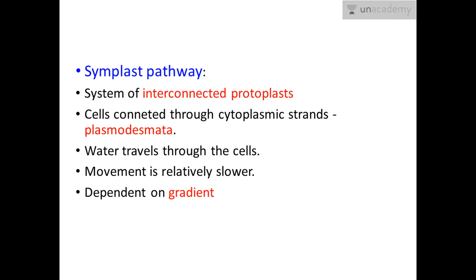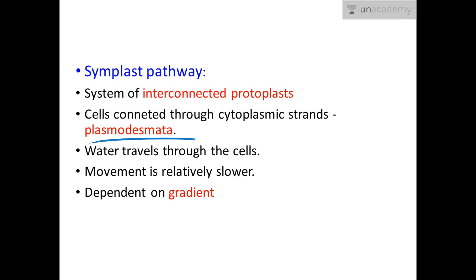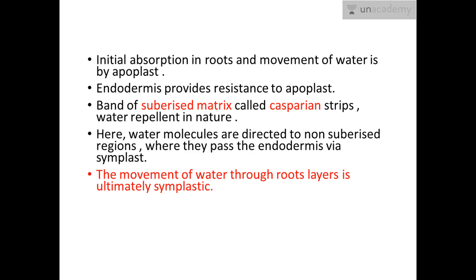The symplast pathway is a system of interconnected protoplasts where substances move through the cells via cytoplasmic strands known as plasmodesmata. Movement through the symplast is relatively slower because water has to cross each and every cell, whereas in apoplast, substances move through free space. However, one thing common to both pathways is that movement is dependent on the gradient.